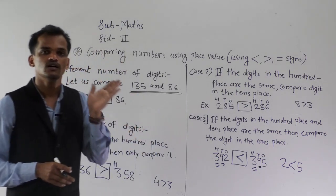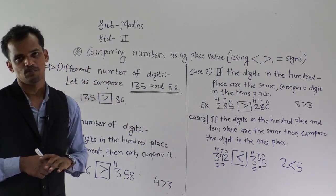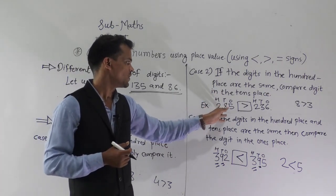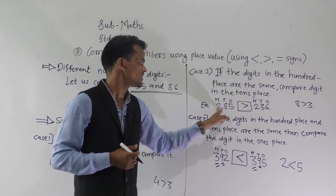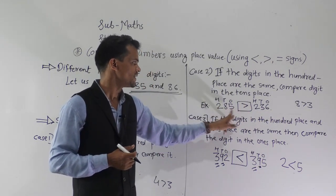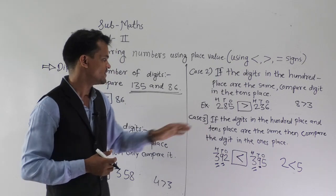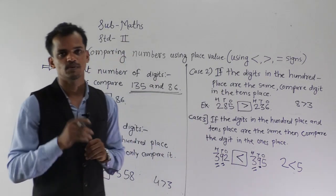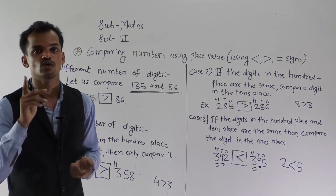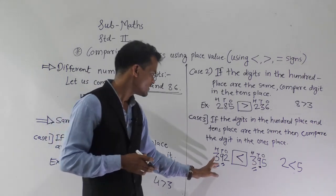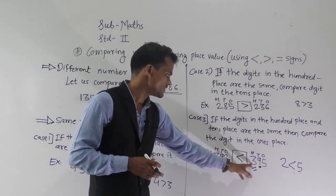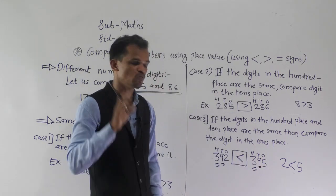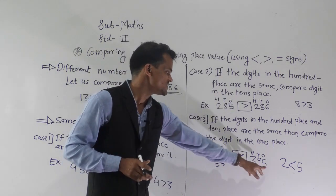The second case: if the 100s place digit is the same, compare the 10s place digit — as in 285 and 236. The third case: if the 100s place and 10s place digits are both the same, compare the 1s place digit — as in 392 and 395, where we compare the 1s place digit.